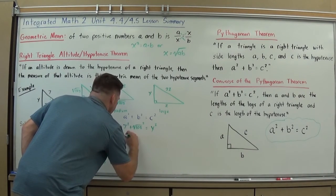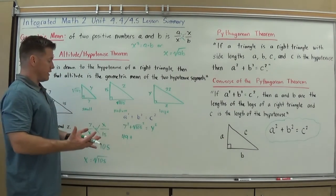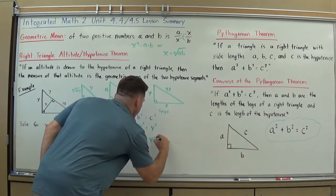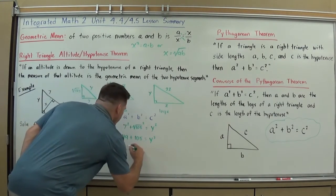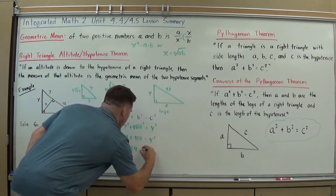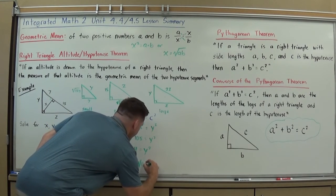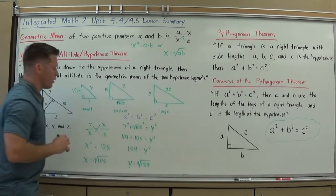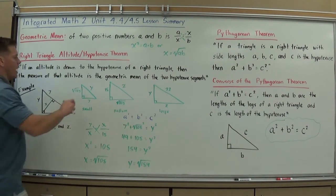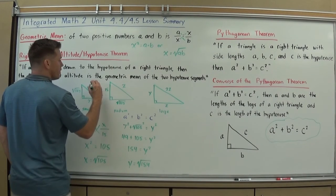7 squared is 49. When you square a square root, you're basically, it's the inverse of it, so you're basically canceling out that square root. So 49 plus 105 is what I end up with. And 49 plus 105 is 154. And then if I take the square root, I get that y must be the square root of 154. And again, I could go in now and replace all the y's in the problem with the square root of 154.